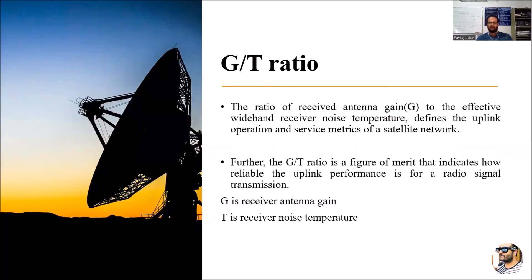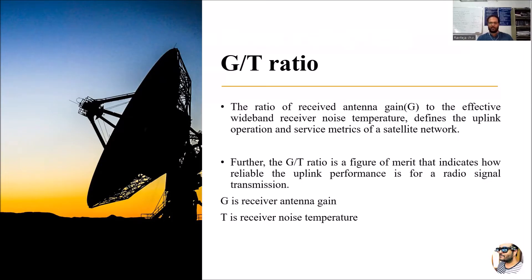Coming to the G/T ratio — this is much more considered since we are using antennas for transmission and reception of the signal. G/T ratio has been seen in previous sessions. G is the received antenna gain of the effective wideband receiver, and T is the receiving noise temperature. The ratio of received antenna gain G with respect to the receiving noise temperature T defines the uplink operation and provides service for the special satellite network.